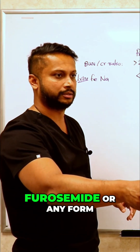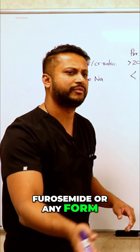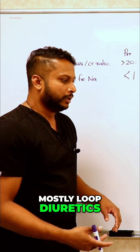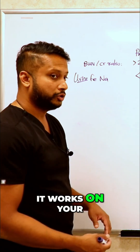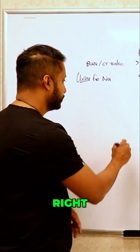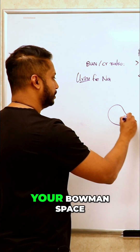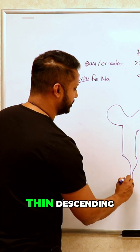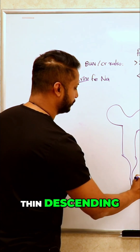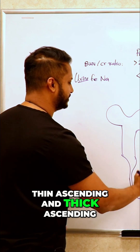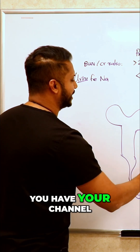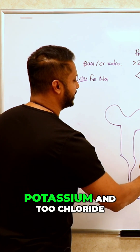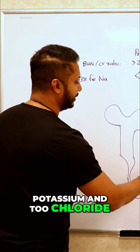Imagine if somebody's on furosemide or any form of diuretic — mostly loop diuretics. Where does the diuretic work? It works on your loop of Henle. So if this is your Bowman space, this is your proximal, thin descending, thin ascending and thick ascending. You have your channel here which reabsorbs sodium, potassium and 2 chloride.